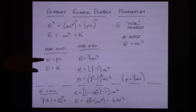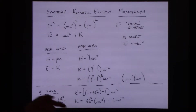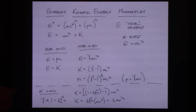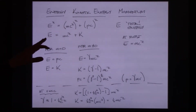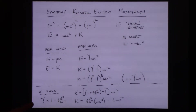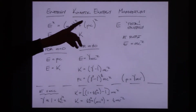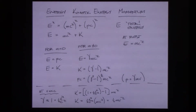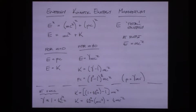For massless particles like photons, the energy and momentum have a very simple relationship: E = pc. We actually used this back in Physics 4B when discussing electromagnetic waves — light contains both energy and momentum. Light can exert a force: if light is absorbed by an object, that object acquires the momentum those photons had.